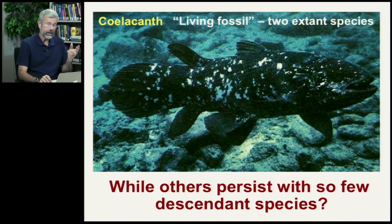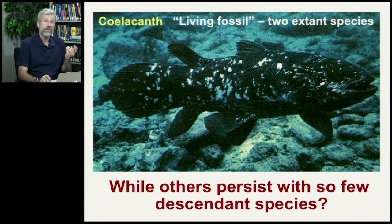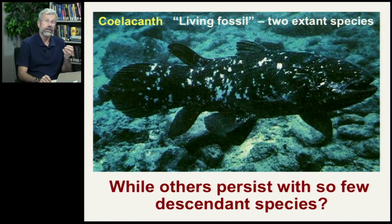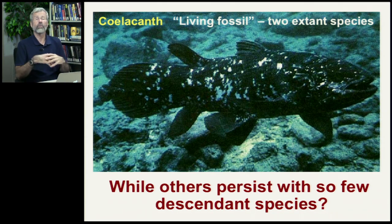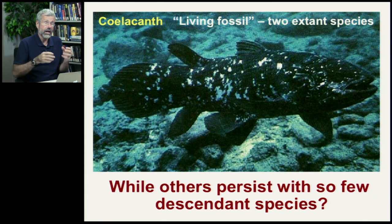On the other hand, we have things like the coelacanth — it's a living fossil. It's been around for hundreds of millions of years, essentially unchanged. And today there are only two species of coelacanth. So why is it that while some species form new kinds of species all the time, others persist with so few descendants?